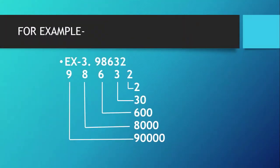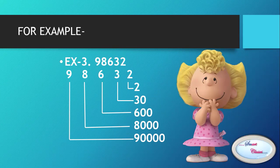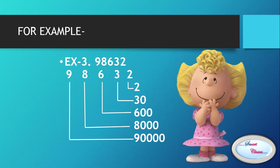Example 3: 98,632. Starting from the right side: 2 is on the ones position, so 2 × 1 = 2. Next, 3 is on the tens position, so 3 × 10 = 30. Then 6 is on the hundreds position, so 6 × 100 = 600. Then 8 is on the thousands position, so 8 × 1,000 = 8,000. Finally, 9 is on the ten thousands position, so 9 × 10,000 = 90,000.